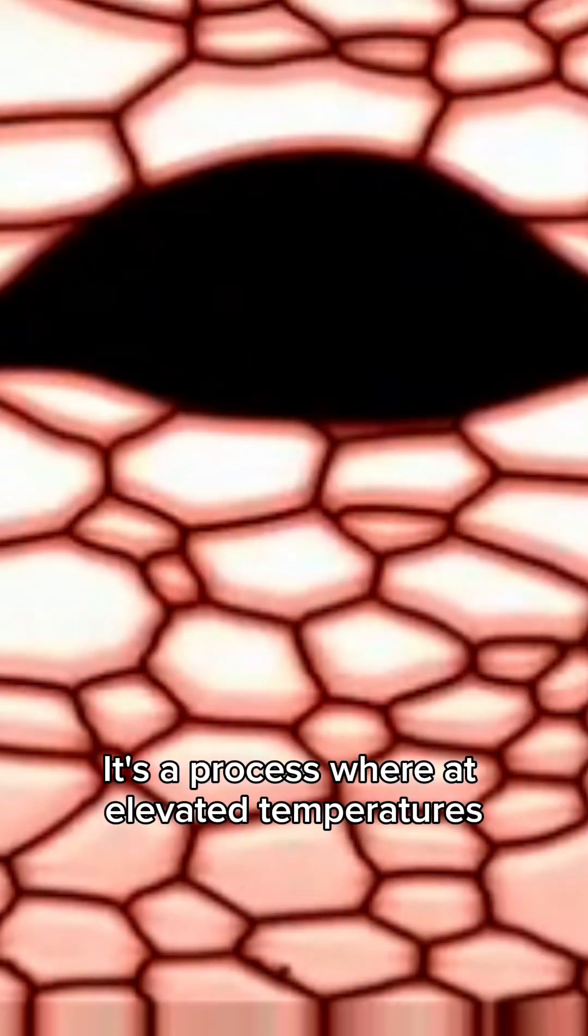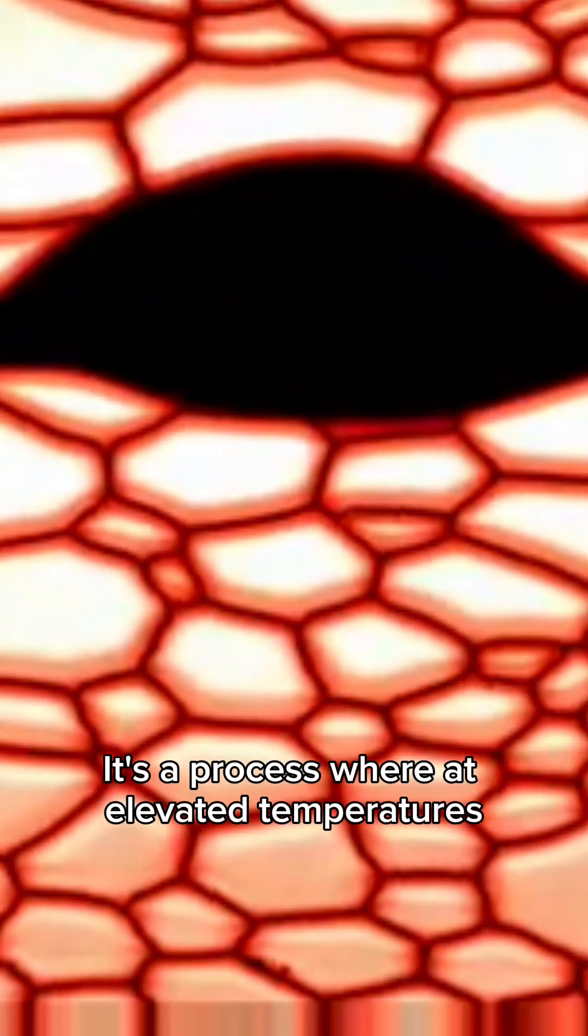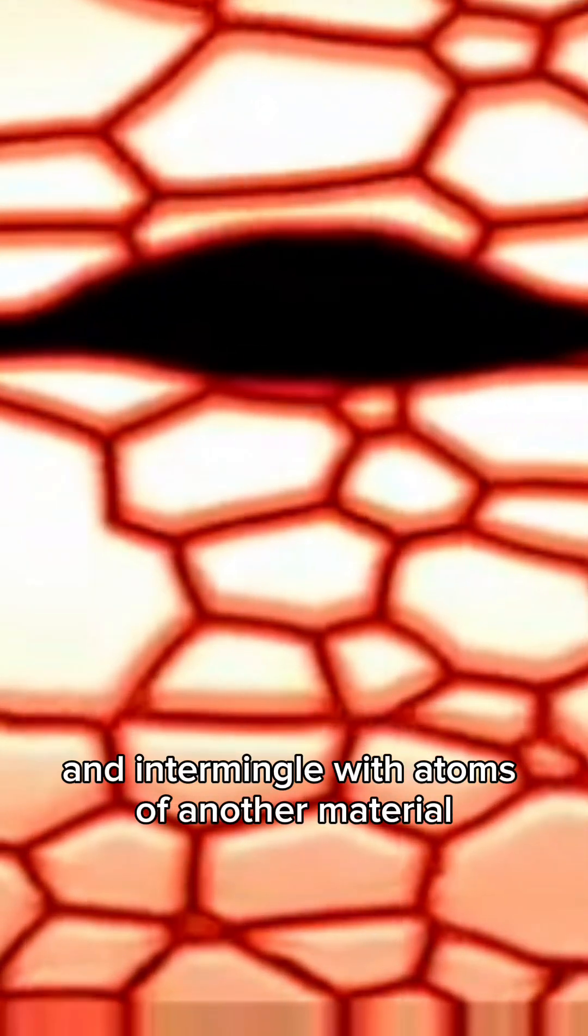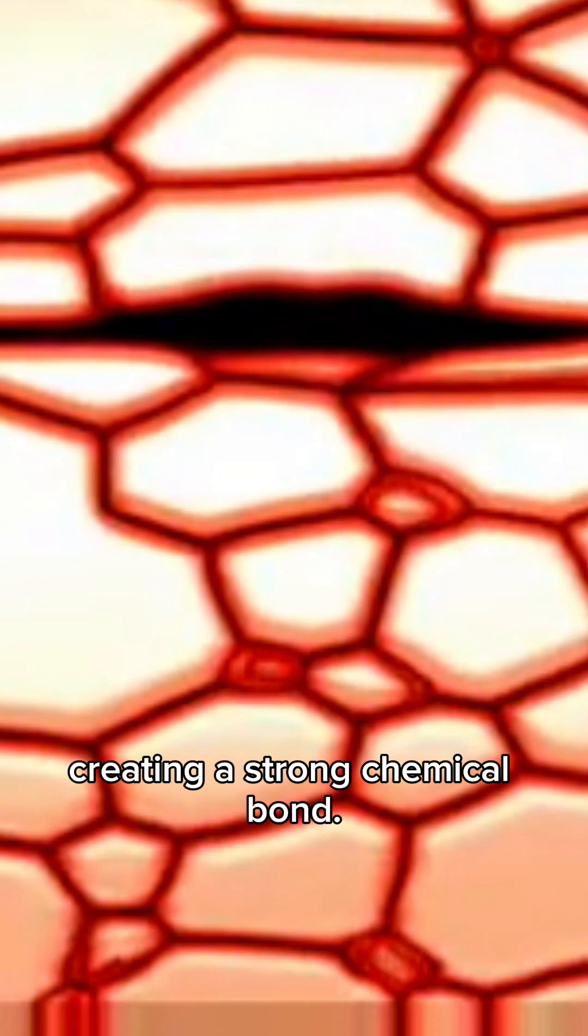What is diffusion? It's a process where at elevated temperatures, atoms of one material move and intermingle with atoms of another material, creating a strong chemical bond.